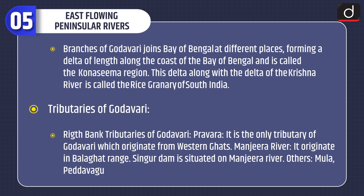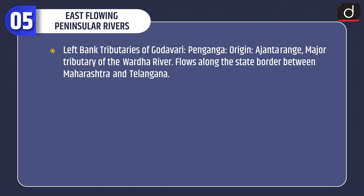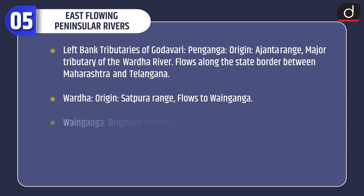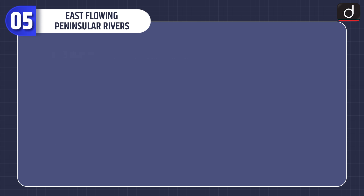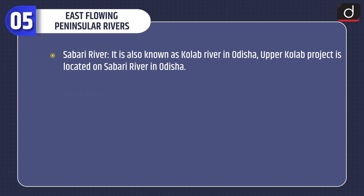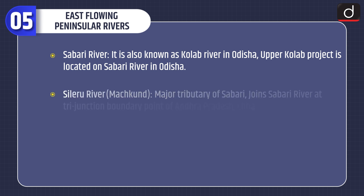Right bank tributaries of Godavari: Pravara, which is the only tributary of Godavari originating from the Western Ghats; Manjira river, which originates in the Balaghat range, with Singur Dam situated on it; and others including Moola and Pedavagu. Left bank tributaries: Pranhita, the largest tributary of Godavari, draining a large part of the Vidarbha region in Maharashtra — Kaleshwaram lift irrigation project is proposed on the Pranhita river. Pain Ganga originates in the Ajanta range and flows along the state border of Maharashtra and Telangana. Wardha originates in the Satpura range and flows into Wainganga. Wainganga originates in the Mahadev hills.